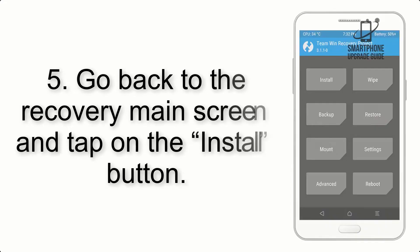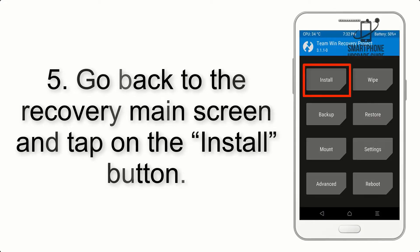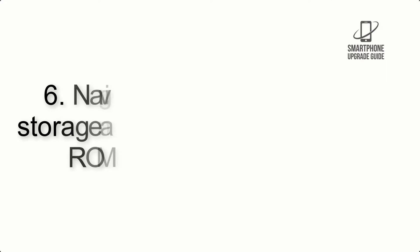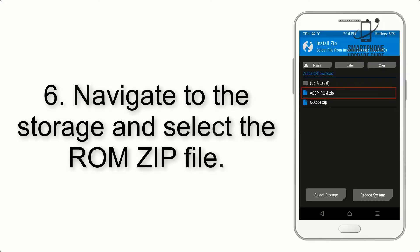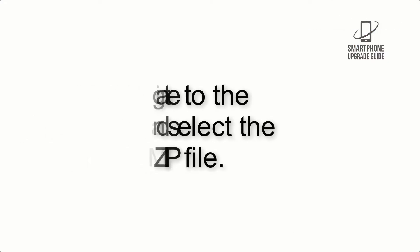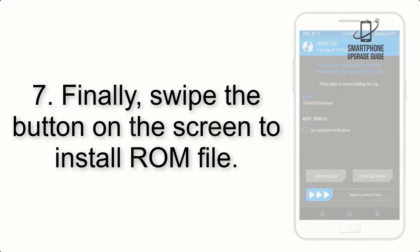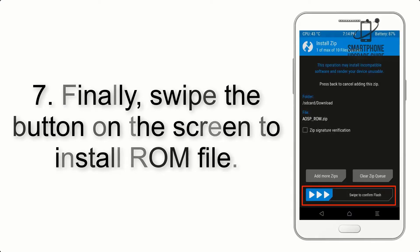Step 5: Go back to the recovery main screen and tap on the Install button. Step 6: Navigate to the storage and select the ROM zip file. Step 7: Finally, swipe the button on the screen to install the ROM file.